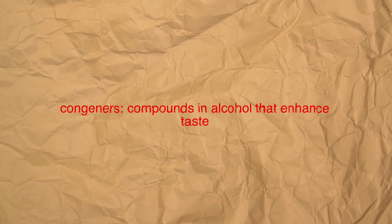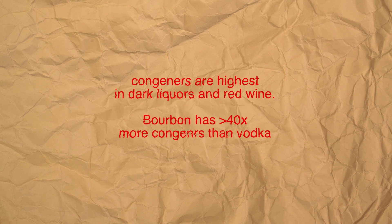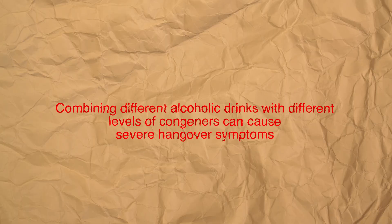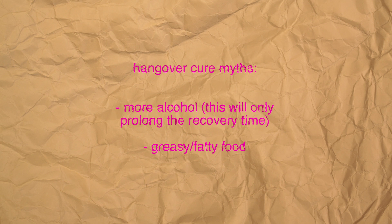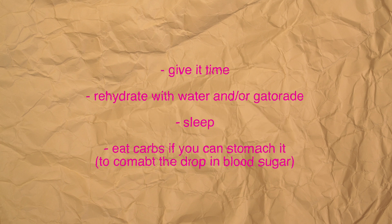Congeners are found more in dark liquors like tequila, brandy, bourbon, and red wine. Combining different alcoholic beverages with different levels of congeners is going to cause more of a hangover. As for hangover cures, there are a lot of myths out there like drinking more alcohol or eating a greasy burger. Drinking more alcohol only prolongs recovery time. Having some carbohydrates might be really important if you can stomach it, because it helps bring your blood sugar back up — since during a hangover insulin is really high and blood sugar drops, causing fatigue and weakness.